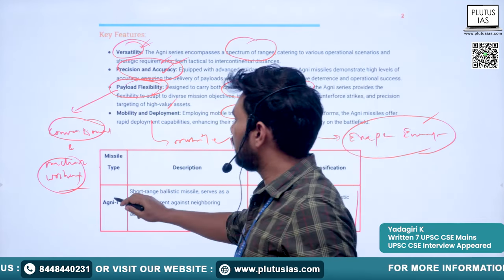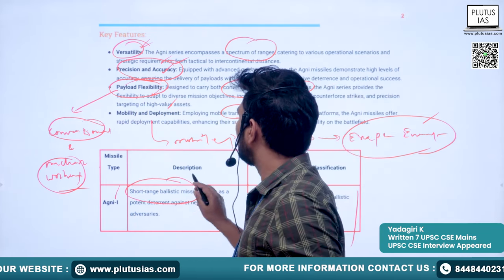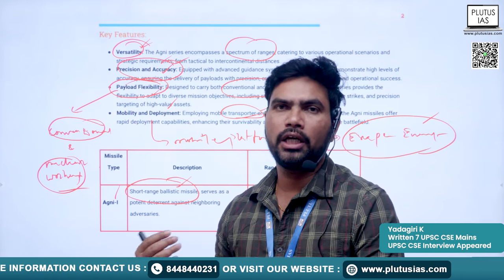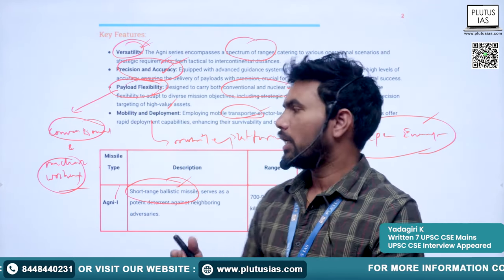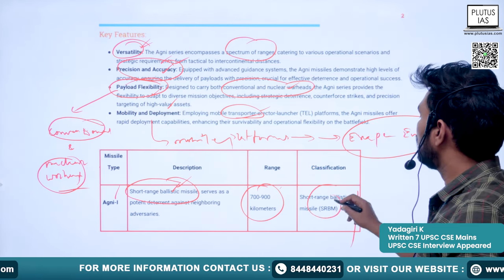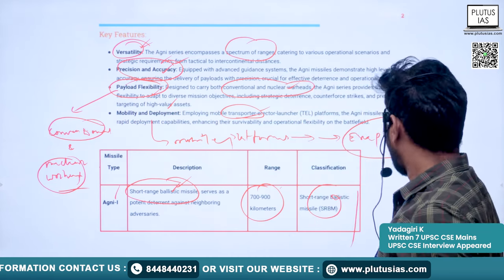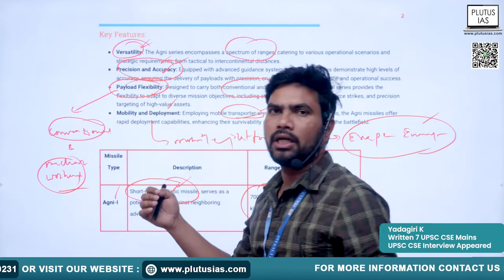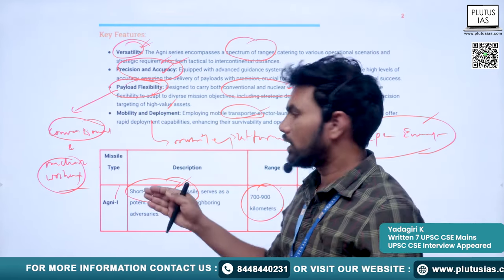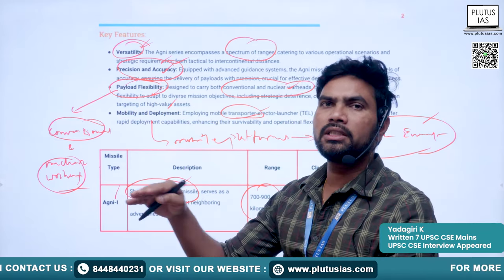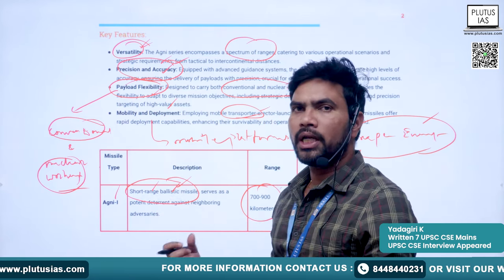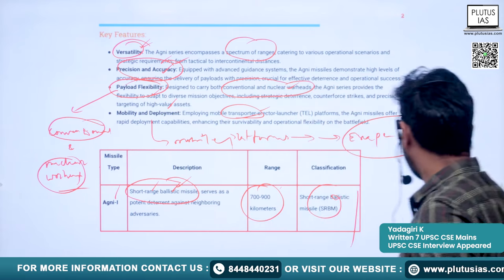There are five variants of the Agni missile. Agni-1 is a short-range ballistic missile with a range of 700 to 900 kilometers. It is important to note that ballistic missiles generally have longer ranges compared to cruise missiles — ranges are classified as short range, intermediate range, and intercontinental.